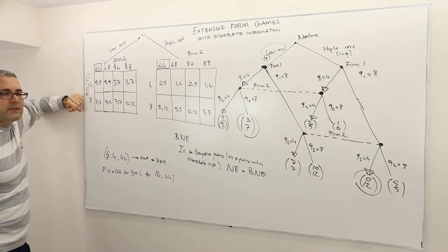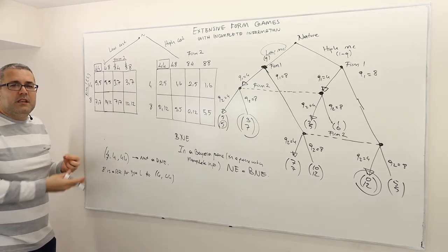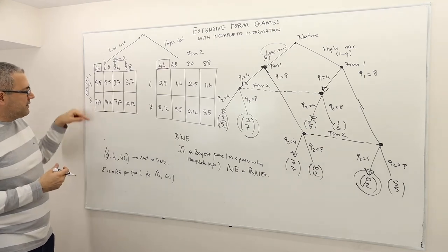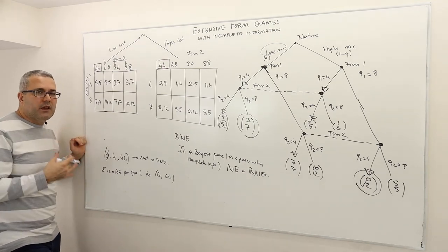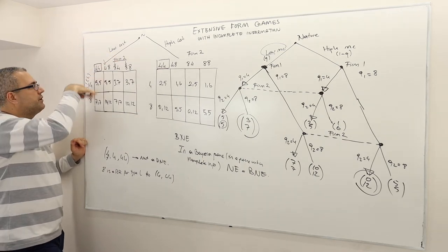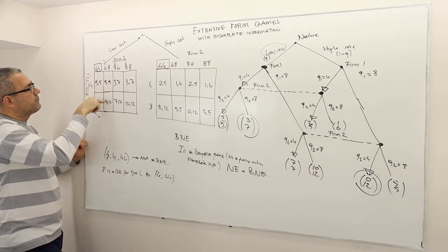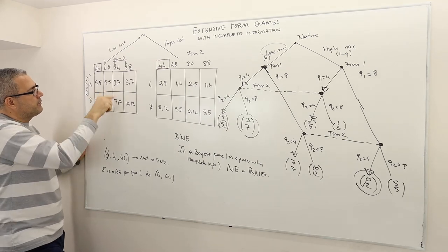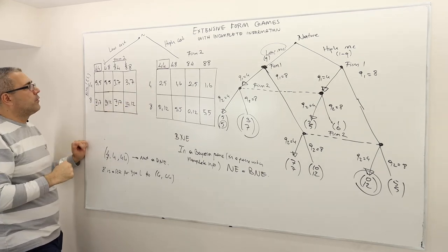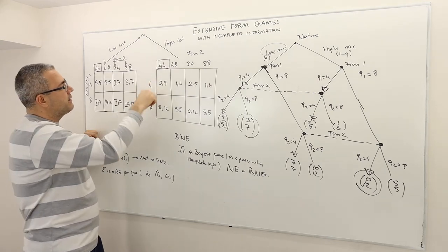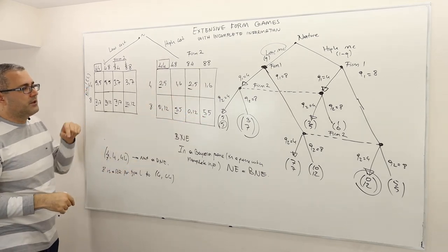Now, in order to find a Bayesian Nash equilibrium, given player two's strategy, I should find the best responses for firm one. Looking across player two's columns: 8 is the best response, then 10 is the best response, then 8 is the best response, and again 8. So 8 is always the best response for the low type firm. And for the high type: sometimes 4, sometimes 8 is the best response.